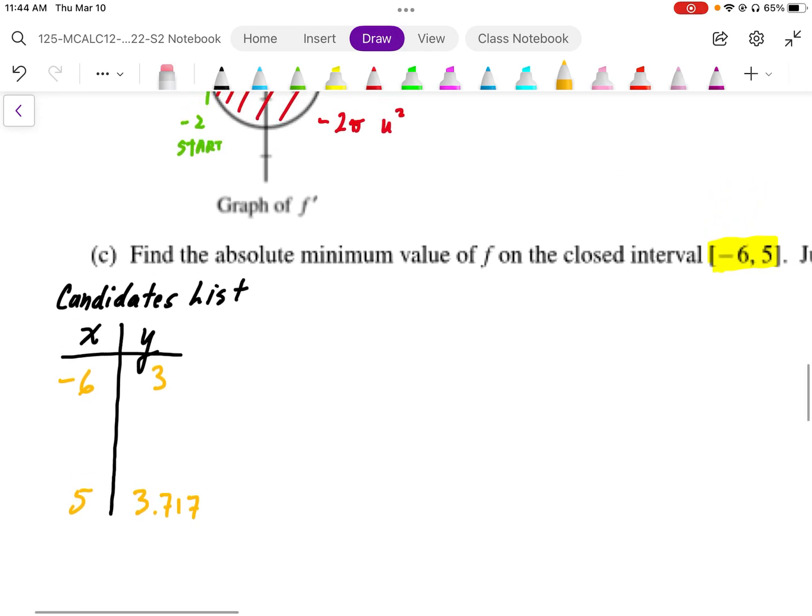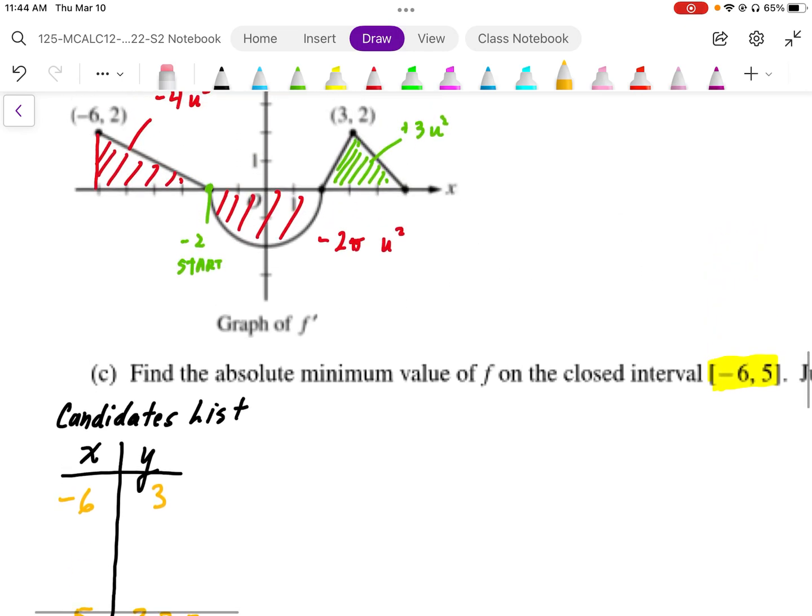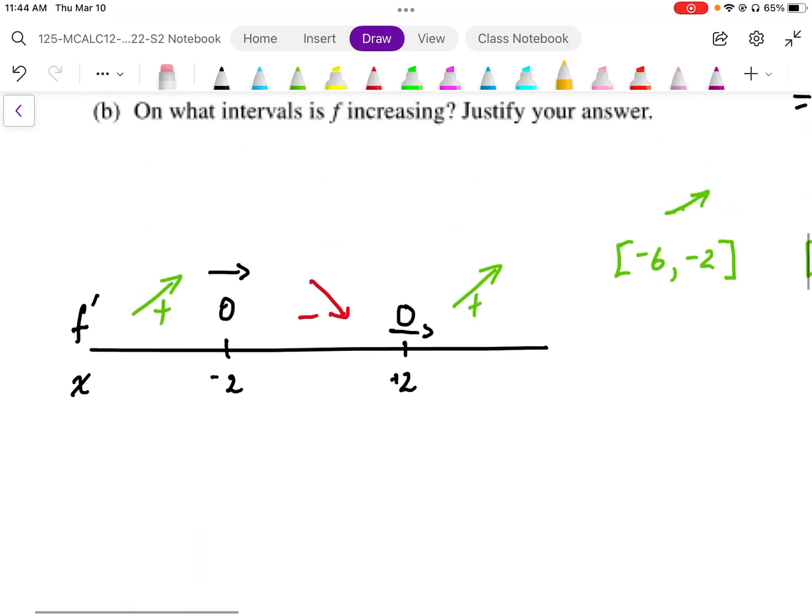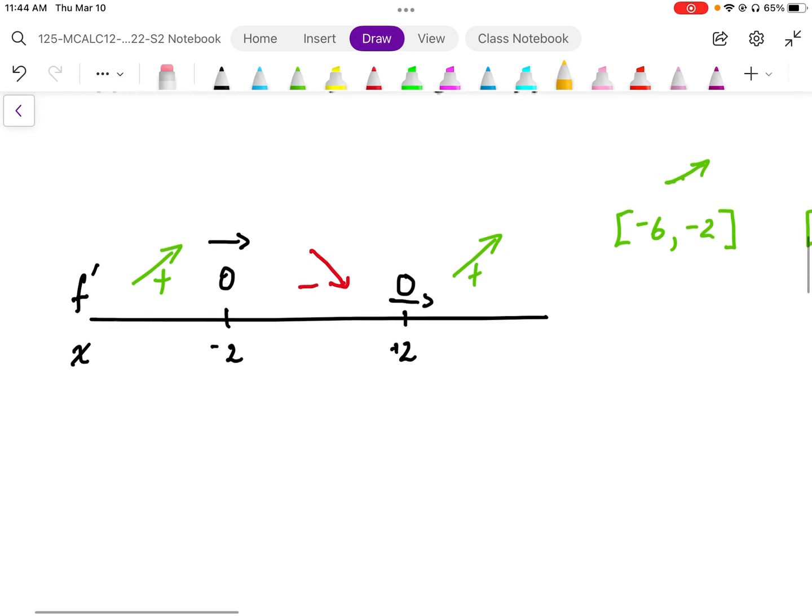So then we need to consider the other points, and that's going to be our critical points, where the slope is equal to 0. Now when we take a look at our slope chart, we can see that we don't really need to consider negative 2, although I'm going to put it in my candidates list. Really, we need to check the positive 2.